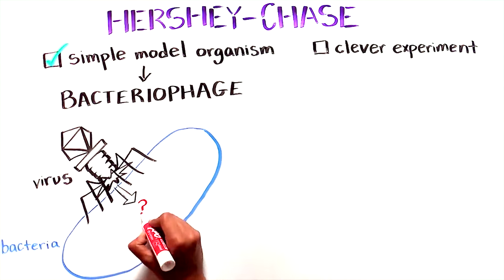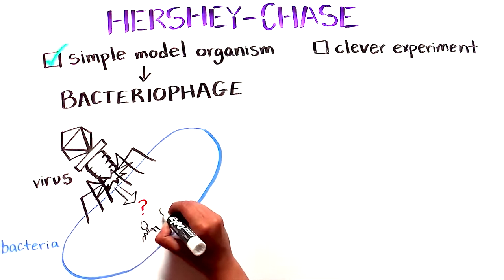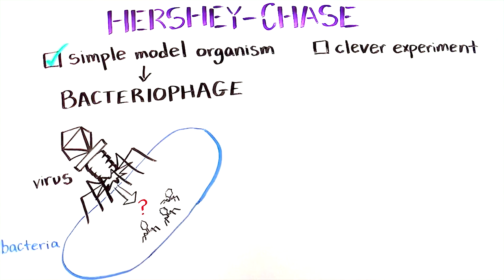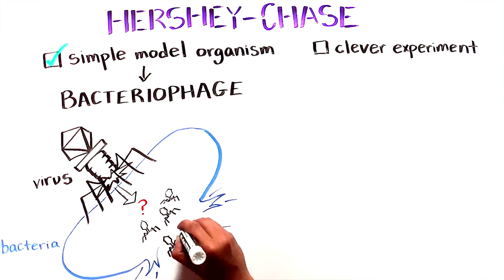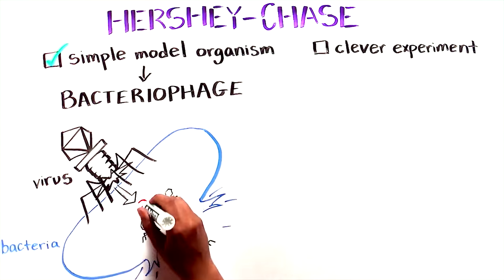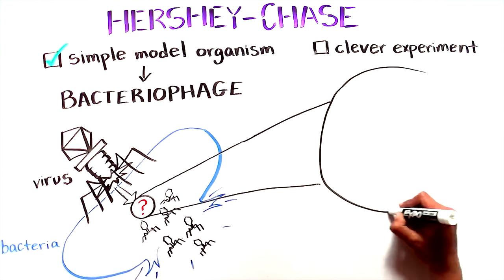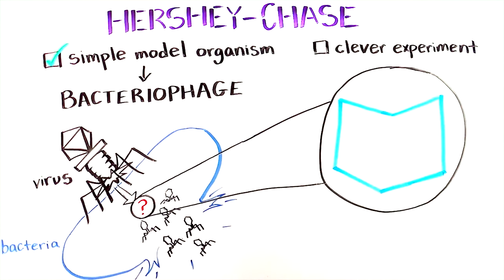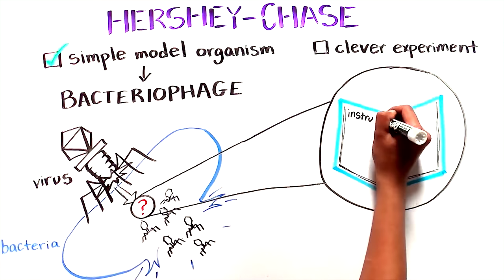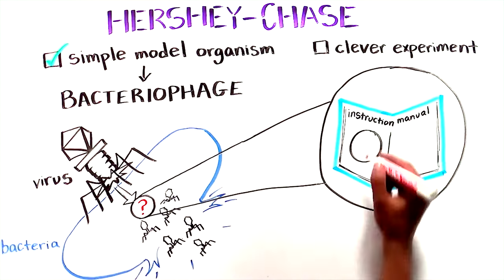It then injects a substance into the bacteria to create many new copies of the virus. These newly manufactured viruses are released when the bacteria bursts. So the substance injected inside of the bacteria must contain the instruction manual for making new virus. It contains the hereditary material.